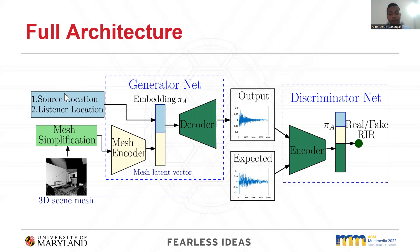We pass the scene vector embedding PiA to a one-dimensional modified conditional GAN to generate a single precise impulse response for the given indoor 3D scene. The standard conditional GAN is conditioned on a random noise Z and a condition Y to generate multiple outputs satisfying condition Y. The modified conditional GAN is only conditioned on Y to generate a single output. The discriminator network discriminates between the ground-truth impulse responses and generated impulse responses during training.